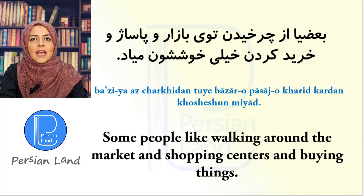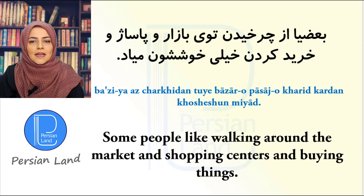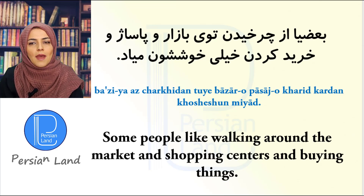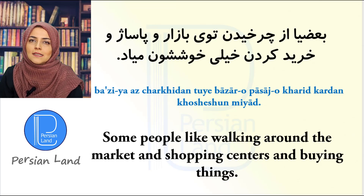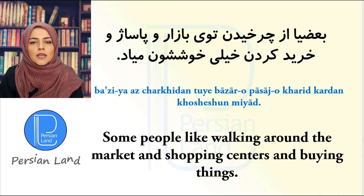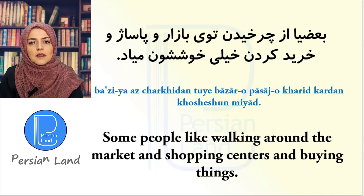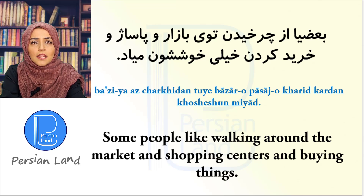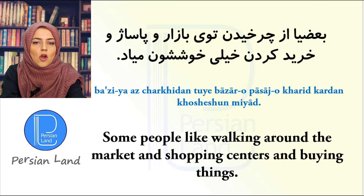بعضی ها از چرخیدن توی بازار و پاساژ و خرید کردن خیلی خوششون میاد. بعضی ها means 'some people'. چرخیدن here means 'walking around'. پاساژ is 'shopping centers'. خرید کردن means 'to buy' — the compound infinitive. خیلی خوششون میاد — خوش آمدن — means 'they like it'.